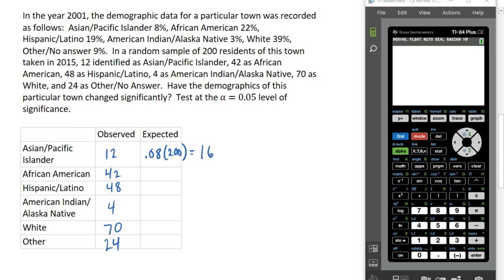The expected count for residents who identify as African American would be 22% of 200, which would be 44. And we can compute the rest of the expected counts in the same way. Here are the remaining expected counts, and if you compare those to what we observed in our sample, those look somewhat similar, but there are some differences.